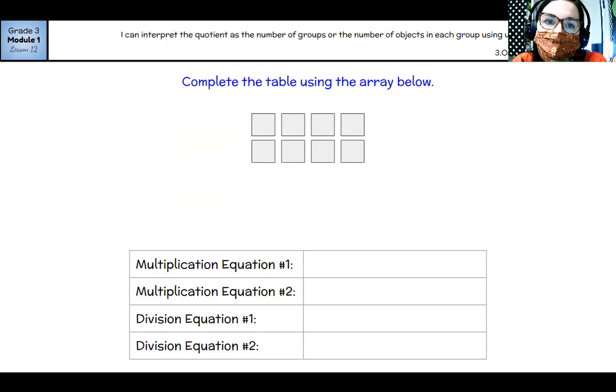All right, I can interpret the quotient as the number of groups or the number of objects in each group using units of two. So let's look at our multiplication equation number one.